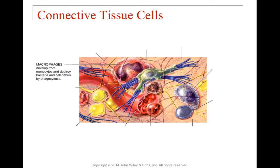Macrophages come from monocytes and are a specialized type of immune cell. They're responsible for destroying bacteria by phagocytosis and also destroying any cellular debris they find. They're basically cellular trash cans, cruising around looking for bad guys they can ingest or any sort of cell debris — reaching out their pseudopods and grabbing in any foreign invaders and consuming them.